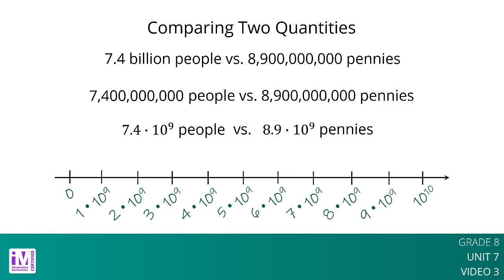or 10 to the tenth power. Then when we plot the point for people at 7.4 times 10 to the ninth, and the point for pennies at 8.9 times 10 to the ninth, we can easily compare the two numbers.